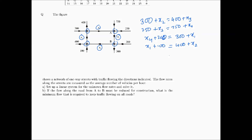Now let's write them in a properly arranged manner. The first equation can be rewritten as x2 minus x3 equals 400 minus 300, which is 100. The next equation gives x3 minus x4 equals minus 500.